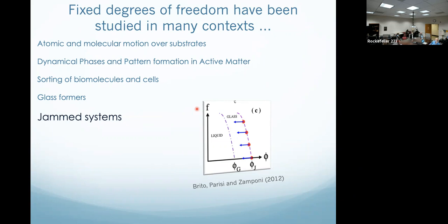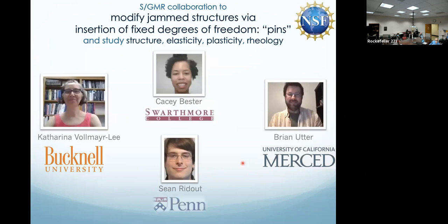Fixed degrees of freedom have been studied in many contexts, including jamming. Brito et al. in 2012 had a lovely paper where they increased the fixed density of particles in their simulation. This was about glass-forming systems, but they also delineated a jamming transition and showed that the more and more pinned particles you have, the lower and lower was the volume fraction that you needed to jam. They showed a number of other lovely results, but this hasn't been heavily studied. We've been very lucky to be funded by the NSF to look into modifying jammed structures by inserting fixed degrees of freedom. Here is our wonderful team from Bucknell, Professor Volmeyer-Lee at Swarthmore, my experimental colleague Casey Bester, Brian Utter who has now moved to a California university, and we depend on Sean Ridout, who just defended his PhD thesis a couple of days ago at UPenn.